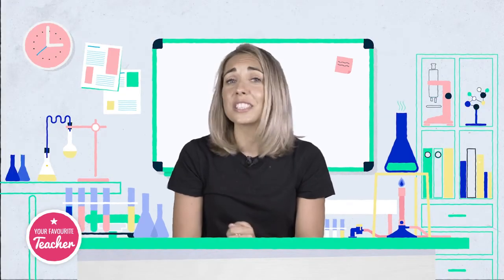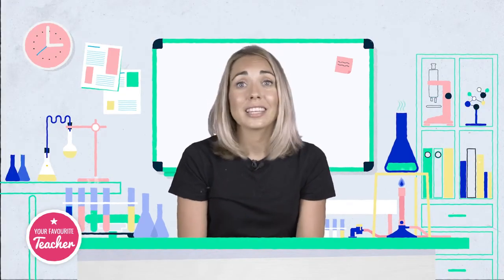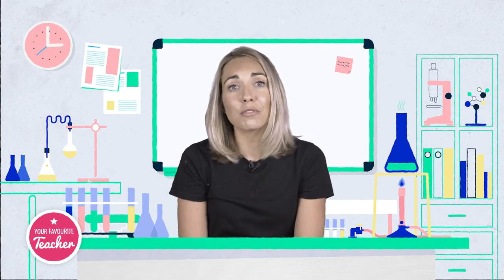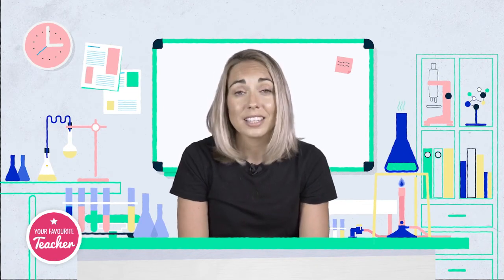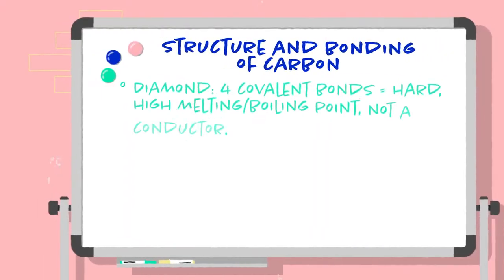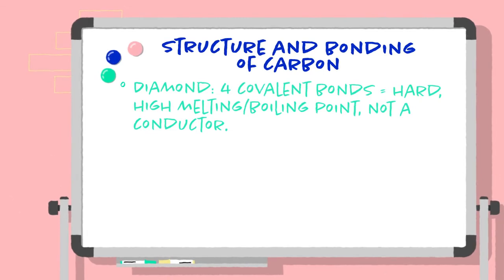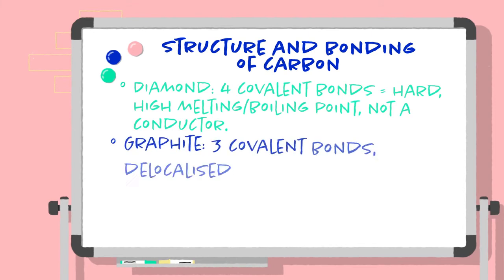So to summarise, carbon can form covalent bonds in lots of different ways. Diamond has four covalent bonds and therefore is hard and has high melting and boiling points but doesn't conduct electricity.